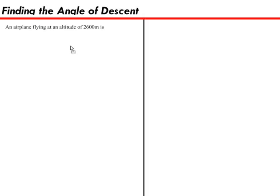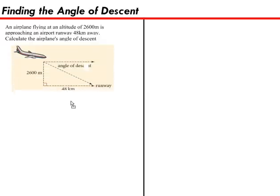An airplane flying at an altitude of 2,600 meters is approaching an airport runway 48 kilometers away. Calculate the airplane's angle of descent.